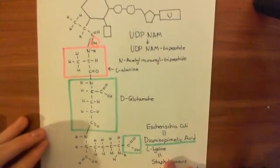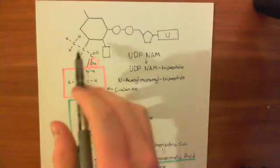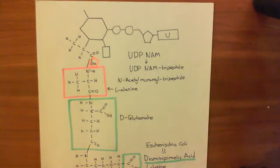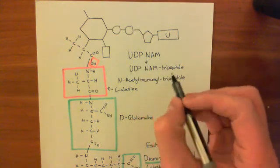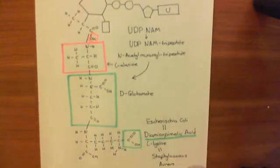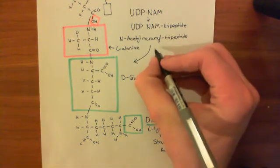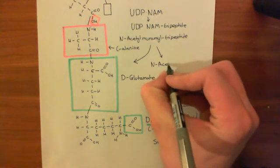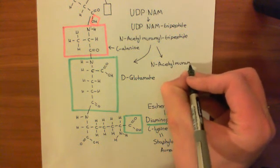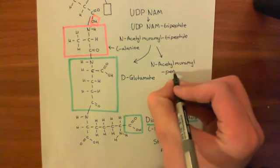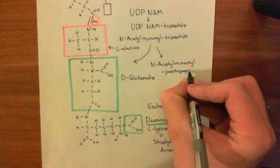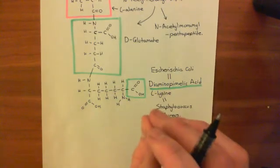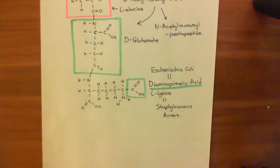This whole structure — the UDP-N-acetylmuramyl group bound with three amino acids, a tripeptide — is the UDP-N-acetylmuramyl tripeptide we have synthesized so far. Now we need to convert this into something even bigger: an N-acetylmuramyl pentapeptide. We need to add two more amino acids to complete it. We'll turn to the next page to discuss which amino acids go on, and then we'll come back to add them — but we'll do that in the next video.